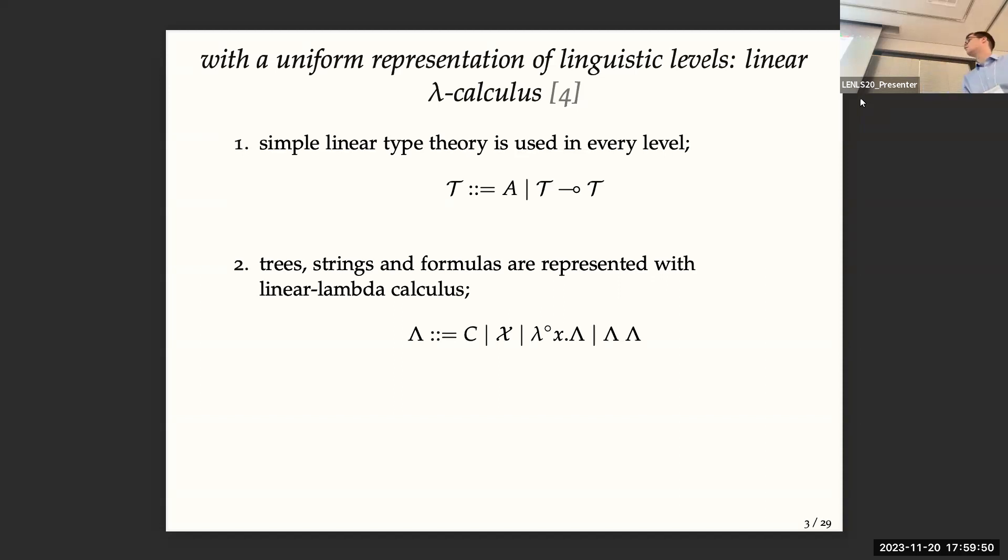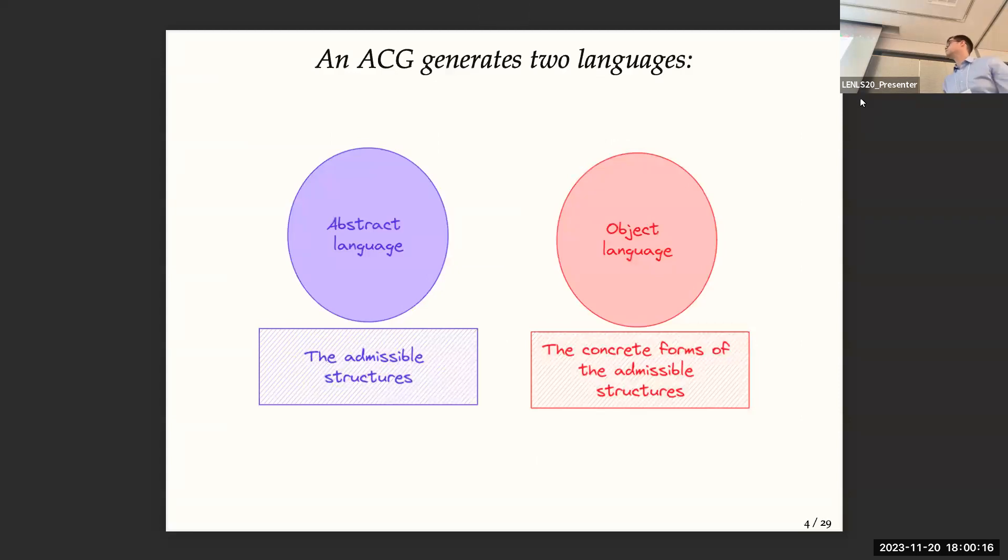Trees, strings, and formulas are represented with linear lambda calculus, so you have a set of constants, a set of variables, the linear abstraction, and the linear application. And how do you define a linguistic level? You define it with a higher-order signature. Basically, an ACG generates two languages, so you have on one end the abstract language, and on the other end the object language. The abstract language is the set of admissible structures, and the object language represents the concrete forms of those admissible structures.